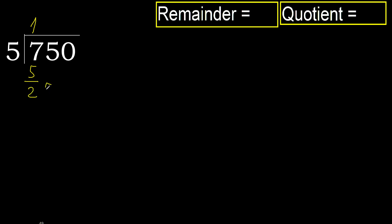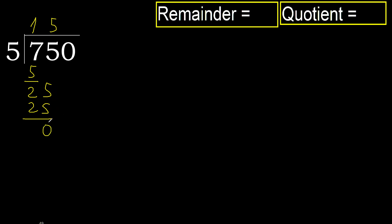Next: 25. 5 multiplied by 6 is greater. Multiply by 5 is 25. Subtract: 25 minus 25 equals 0.